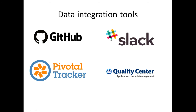Another tool is Slack, a team messaging application where people in different parts of the team can work together to make sure information is sent to the right people. For example, if you're a developer with a question about how a specific issue or story is written, you can reach out to a BA through Slack to better understand what they want in the application.